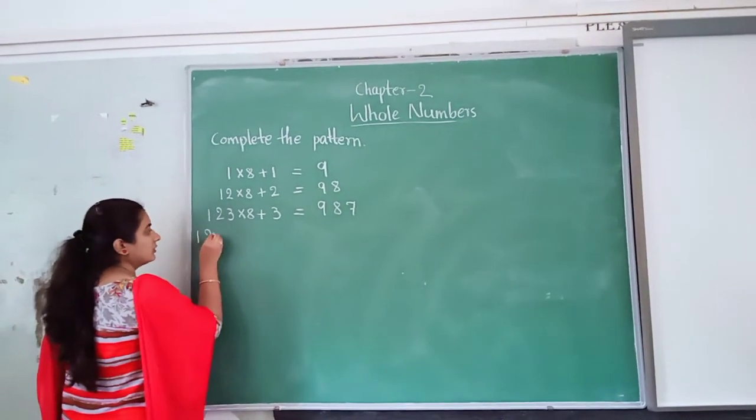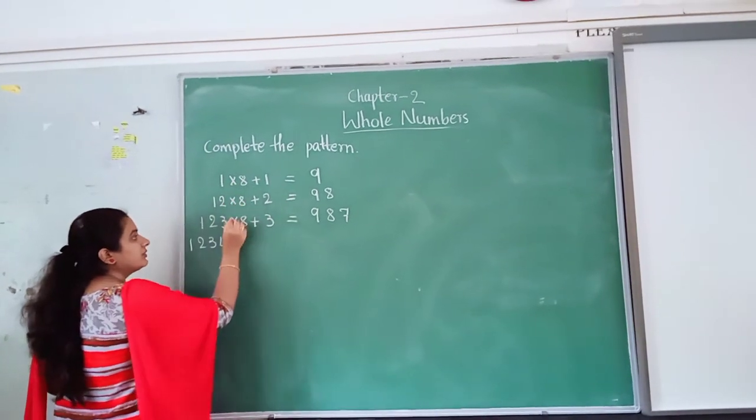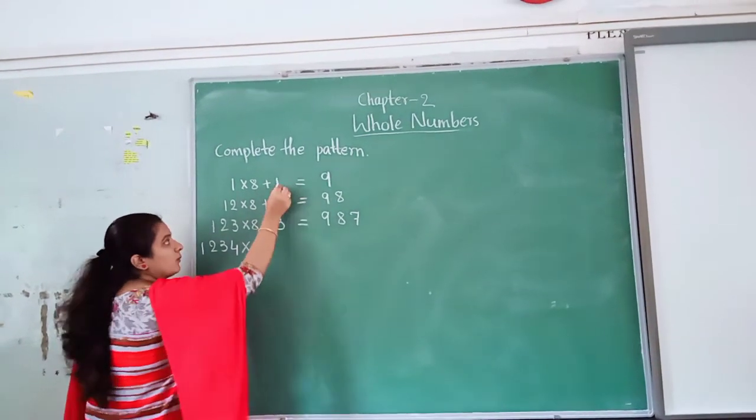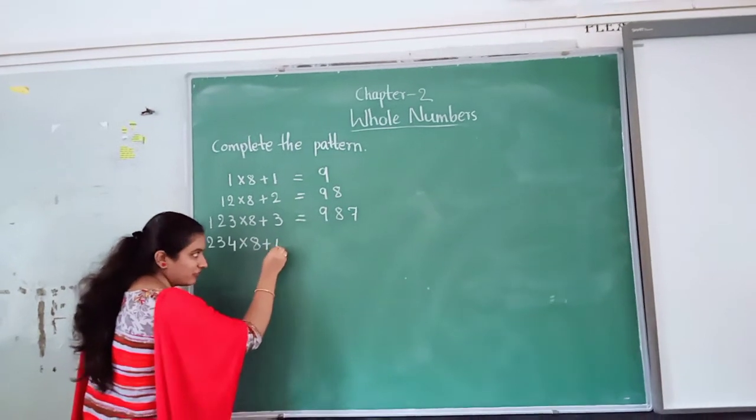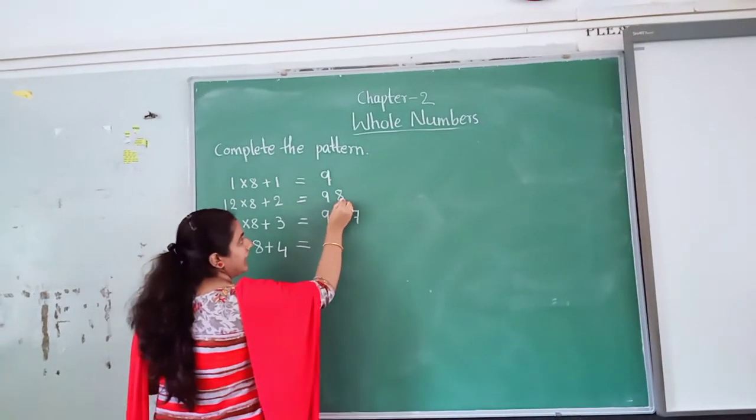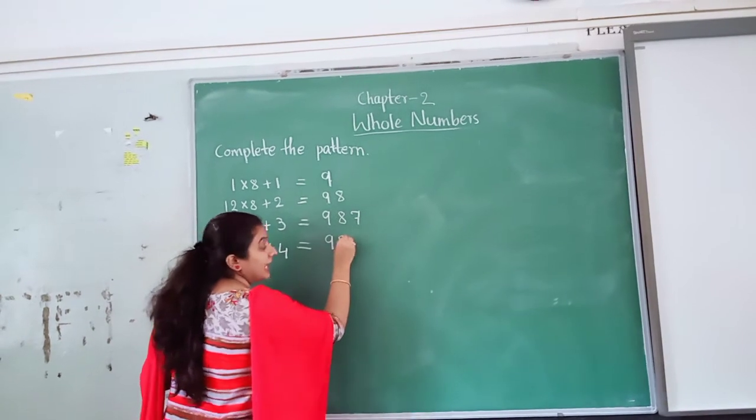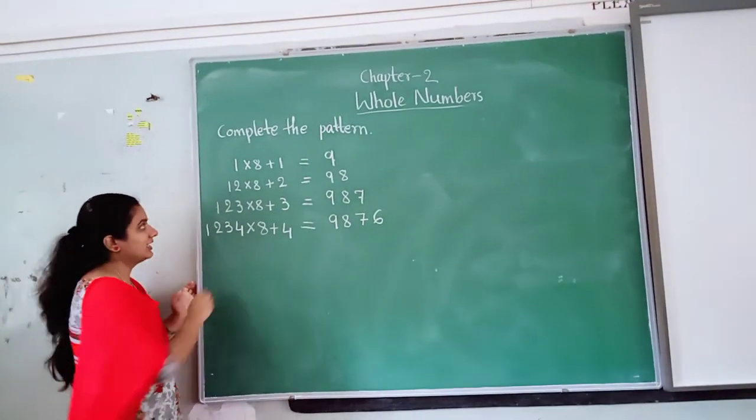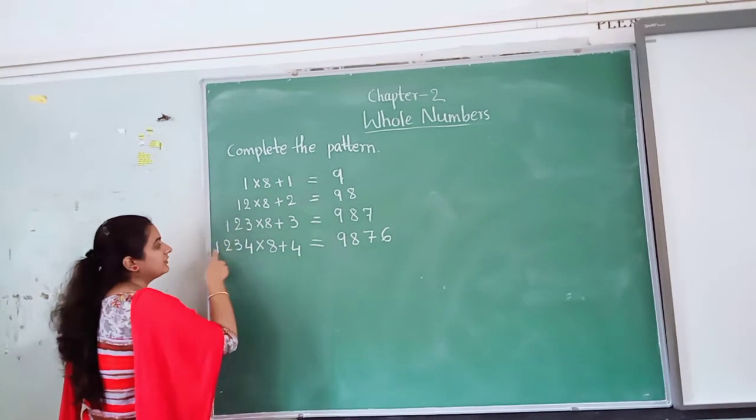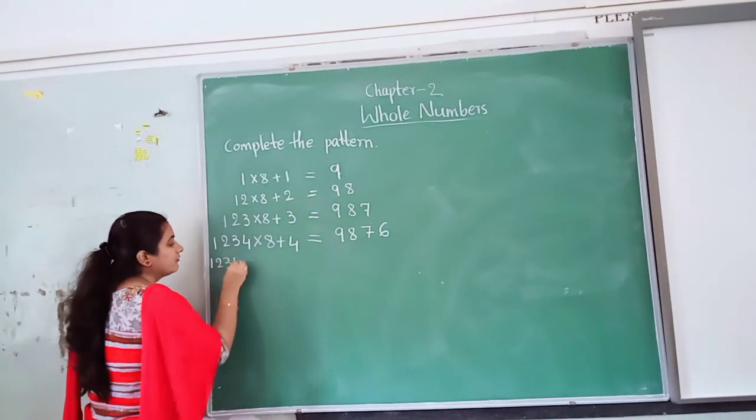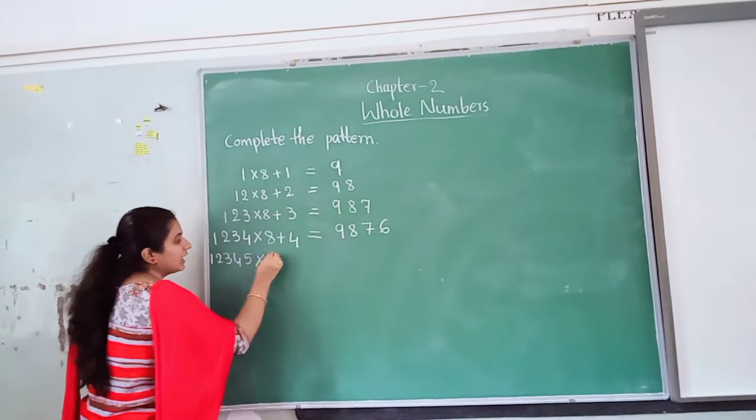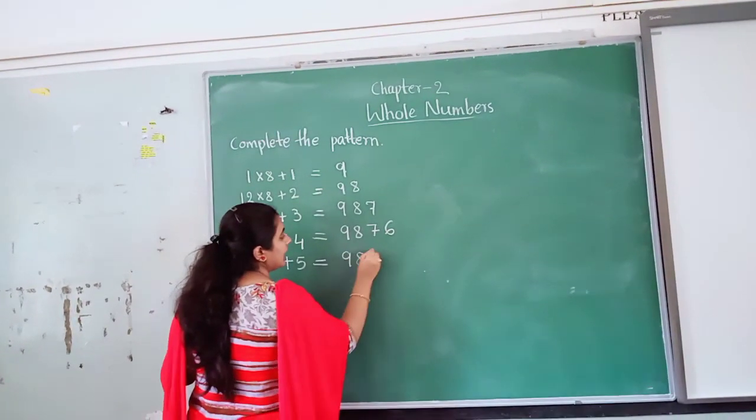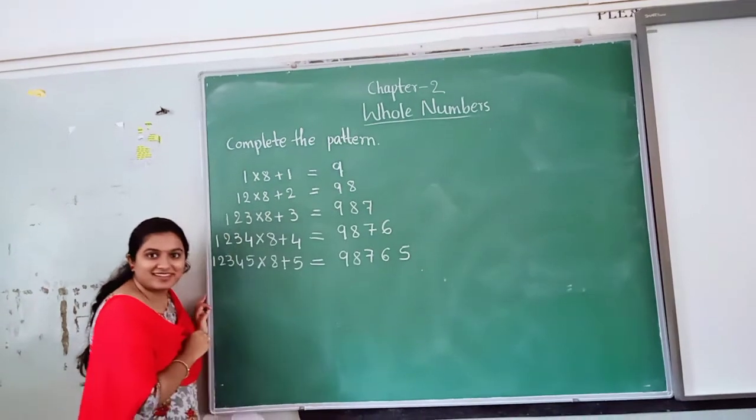What do I have? 1, 2, 3, 4. 1, 2, 3, 4. Into, into, into, into. 8, 8, 8, 8. Plus, plus, plus, plus. 1, 2, 3, 4. Is equal to 9, 9, 8, 9, 8, 7, 9, 8, 7, 6. Backward numbers. So now, 1, 2, 3, 1, 2, 3, 4, 1, 2, 3, 4, 5. Into 8. Plus 1, 2, 3, 4, 5. Is equal to 9, 8, 7, 6, 5.